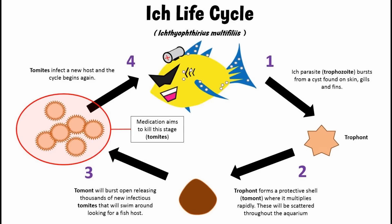The ich parasite can enter your tank in various different life stages. It can be present on fish as well as attached to plants, rocks, and other things you commonly add to your aquarium. To help reduce the chances of infecting fish, it's always beneficial to quarantine new fish and even plants before adding them to your main tanks — something that we're all guilty of not doing in every circumstance.